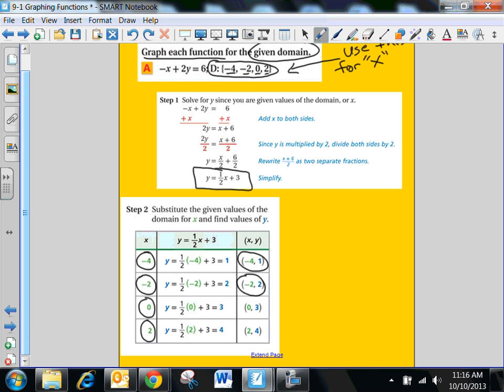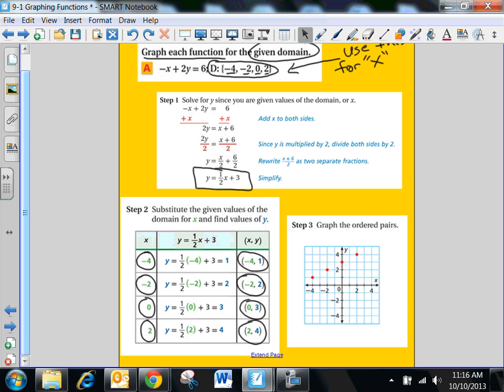negative 4, 1, negative 2, 2, 0, 3, and 2, 4. And once I get those, I can plug them into the graph, which is over to the right.